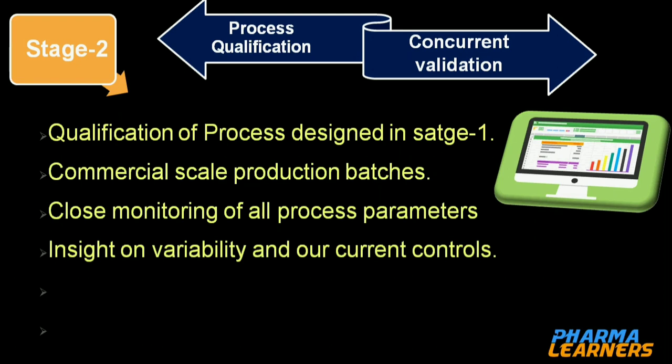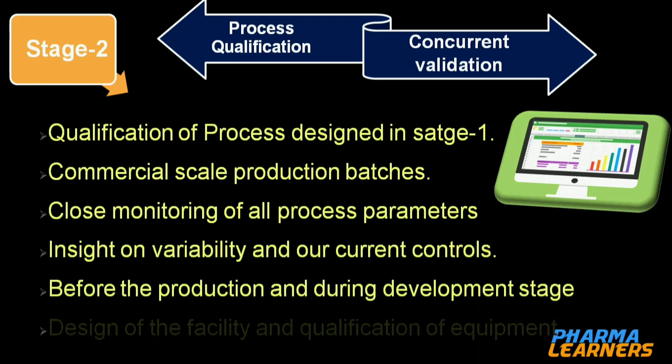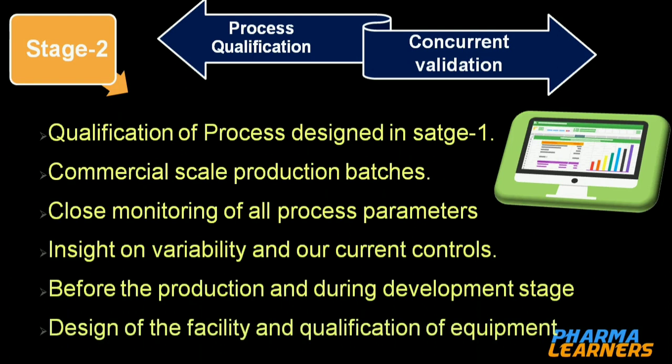The data collected covers CQAs and CPPs — critical quality attributes and critical process parameters — which gives us in-depth insight into variability and our current controls. We also check the design of the facility and qualification of equipment at this stage.